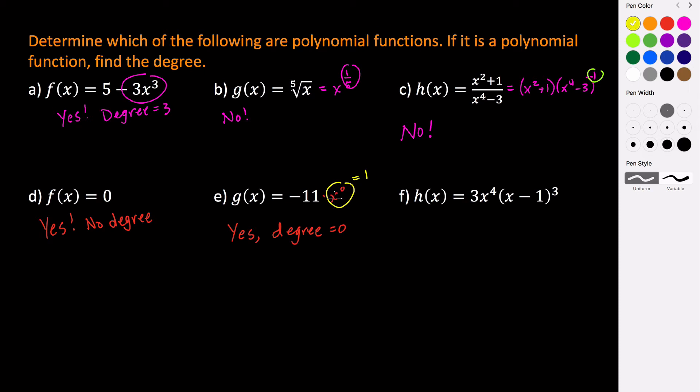So any value of x that is not equal to zero, if we raise it to the zero power, we get 1. So g of x equals negative 11. This is a polynomial function, and it has a degree of zero.